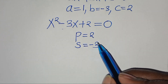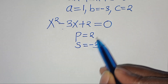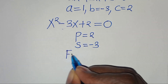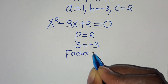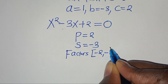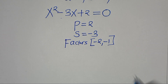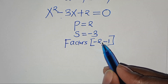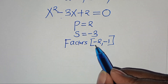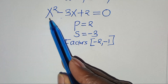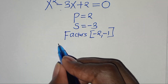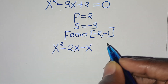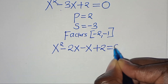So we identify 2 factors: if we multiply those 2 factors, we get a value of 2; if we sum those 2 factors, we get a value of minus 3. So these 2 factors are minus 2 and minus 1. If you have minus 2 times minus 1, this is equal to 2; minus 2 plus minus 1, this is minus 3. So let's substitute these 2 factors into the equation, so that we have x to the power of 2, minus 2x, subtract x plus 2, this is equal to 0.